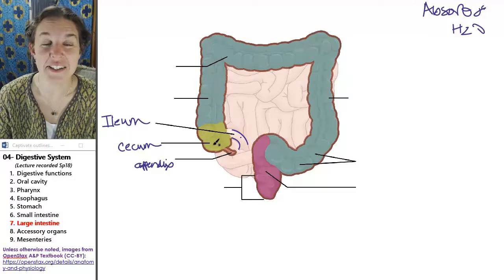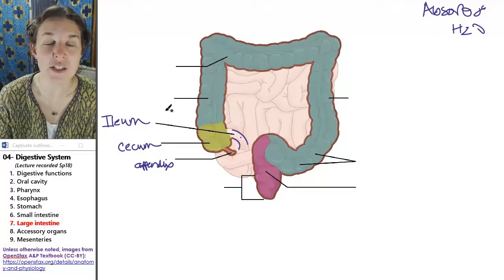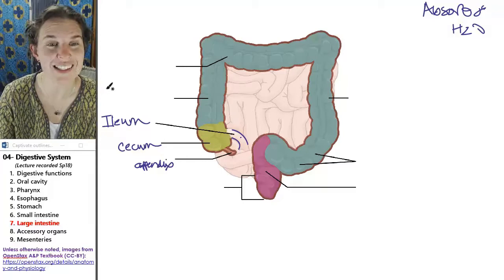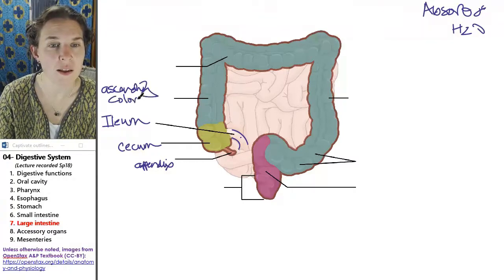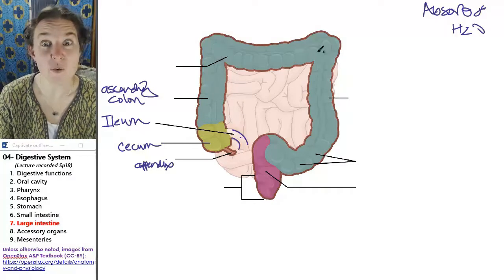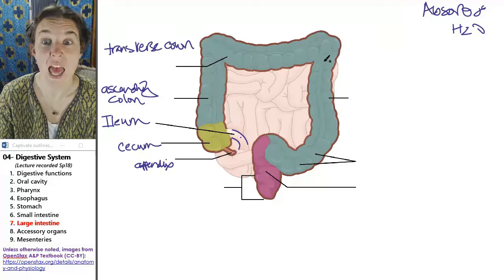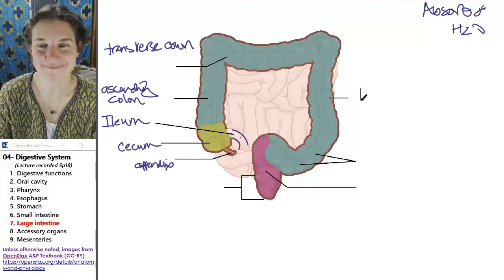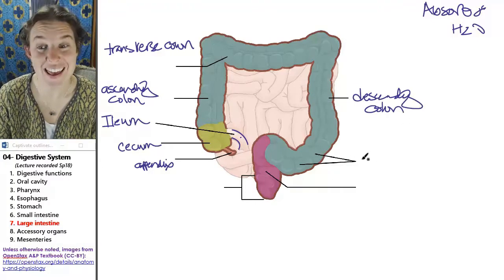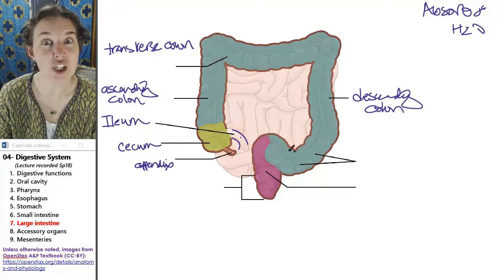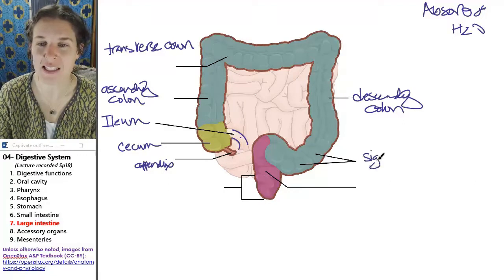Okay, so the cecum, we enter first, then we enter the ascending colon. Then you get the transverse colon. Then you get the descending colon. And then a little S-shaped piece of colon called the sigmoid, S-shaped colon.